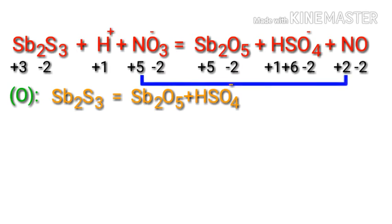In this reaction, nitrogen has a charge of plus 5 and it is changing into plus 2, so nitrogen is being reduced.